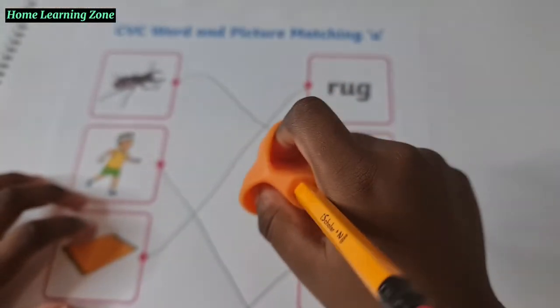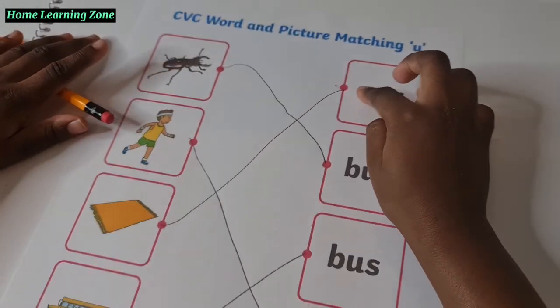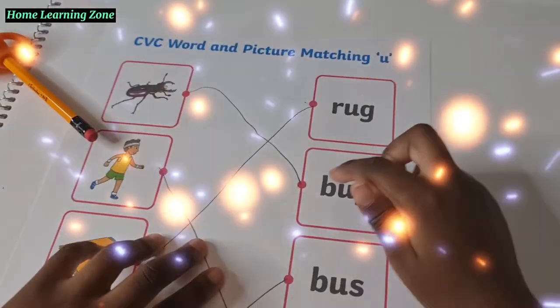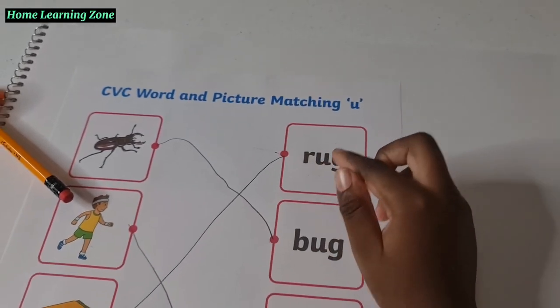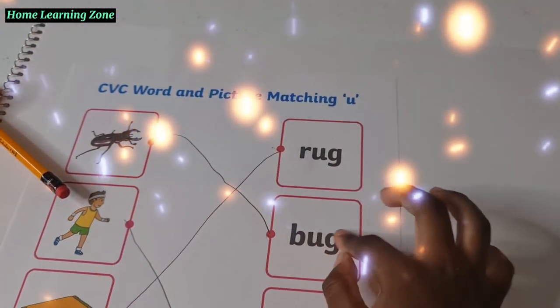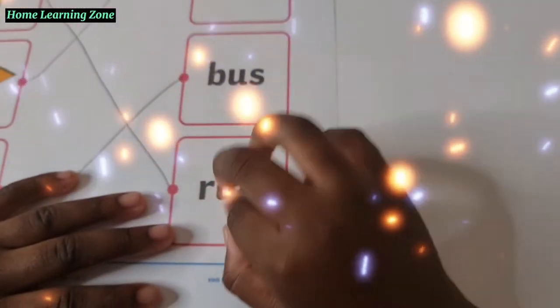Point to the words and read them now. Rug. What's the first one? Point to the words and read them. Rug. Rug. Bug. Bug. Bus. Bus. And run. Run.